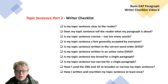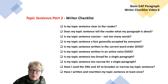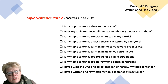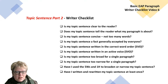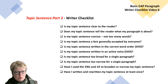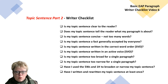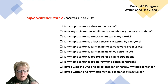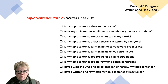Writer's checklist — this is for both videos five and six. Is my topic sentence clear to the reader? Does it tell the reader what my paragraph is about? Is it concise — not too many words? Is my topic sentence a fact generally accepted by everyone? If yes, don't use it. Is my topic sentence written in the correct word order — subject, verb, object? Is it written in the active voice? Is my topic sentence too broad or too narrow for a single paragraph? Have I used the five W's and one H to broaden or narrow it? Have I written and rewritten my topic sentence at least once?